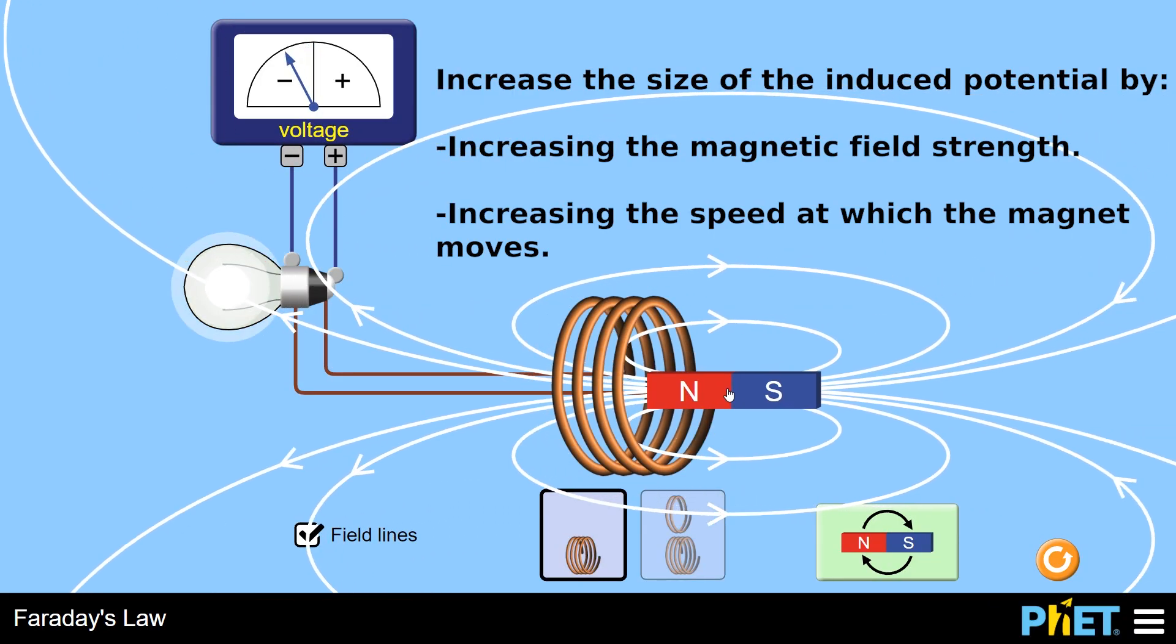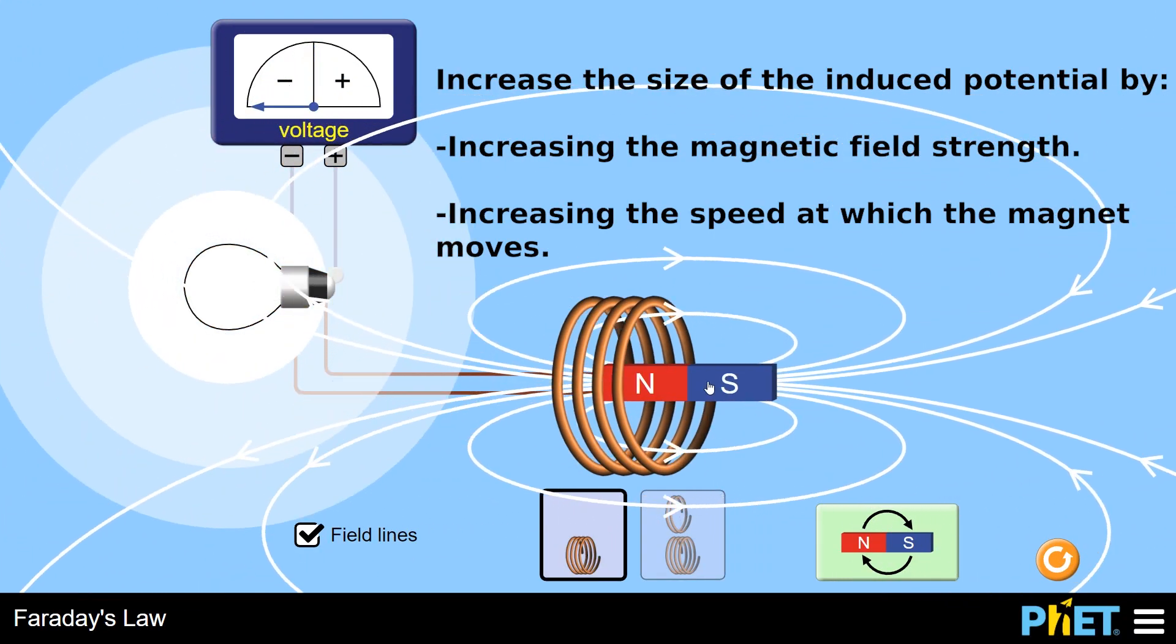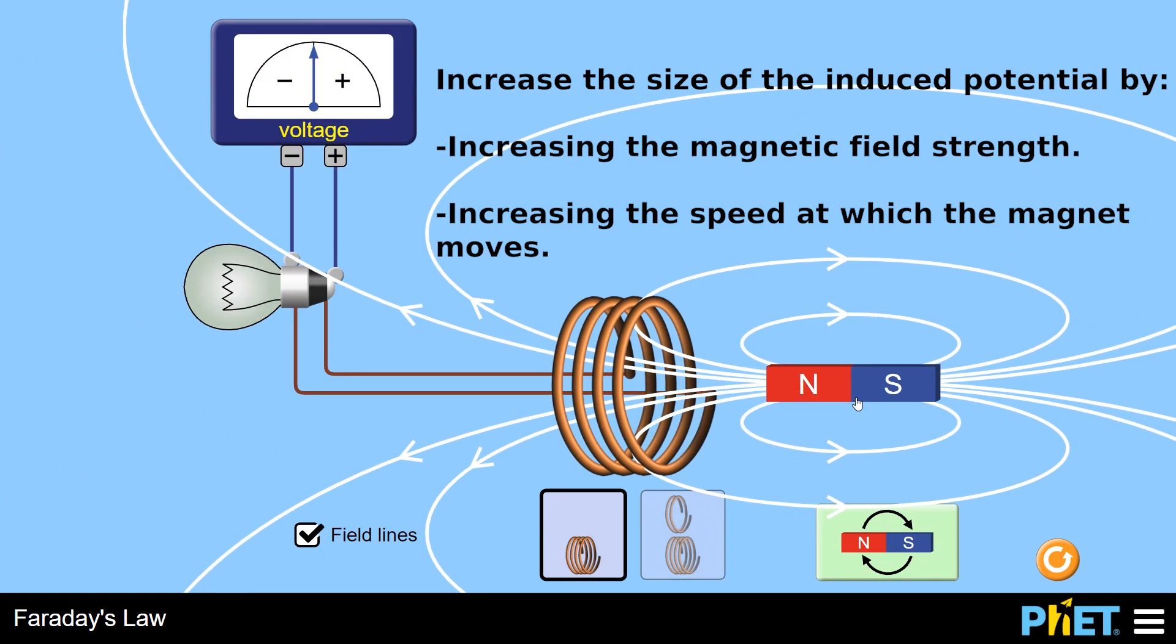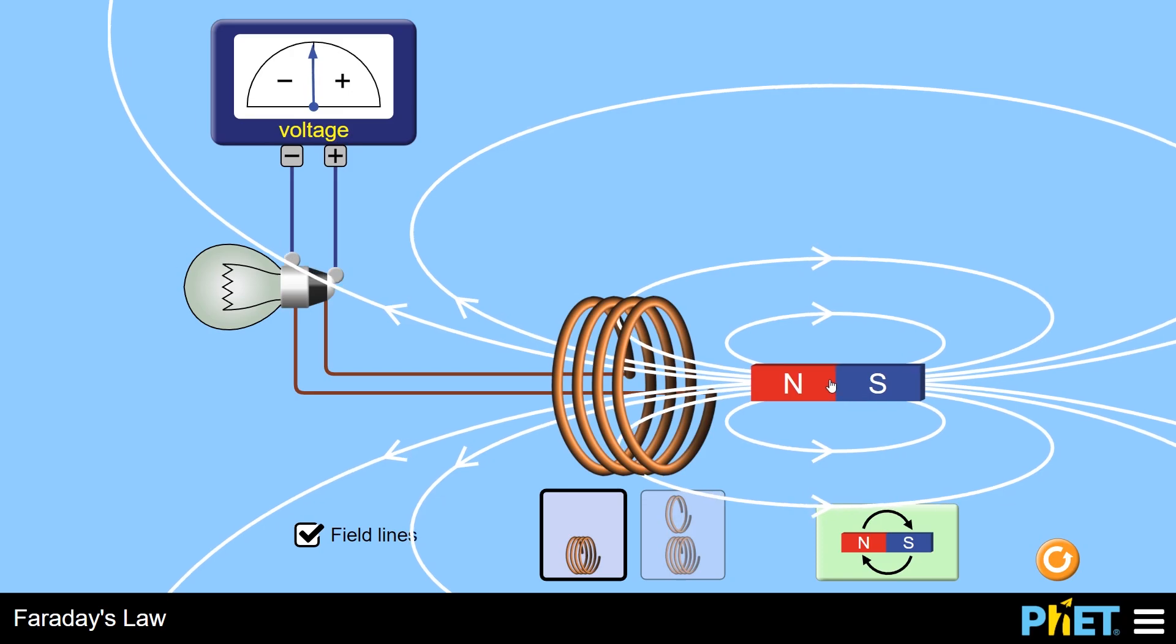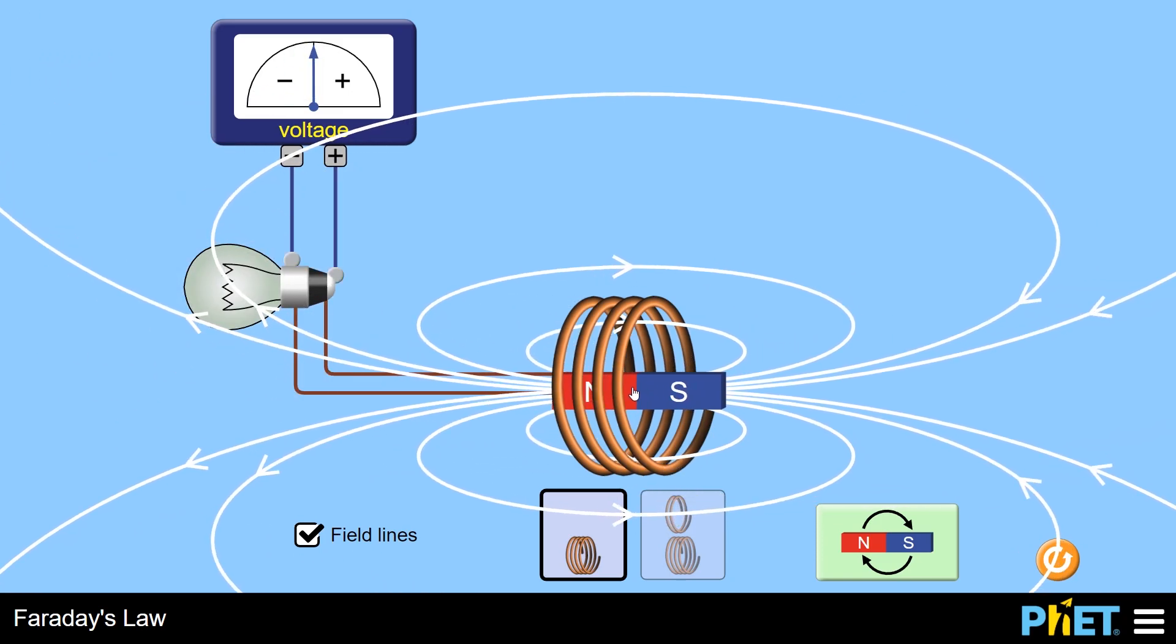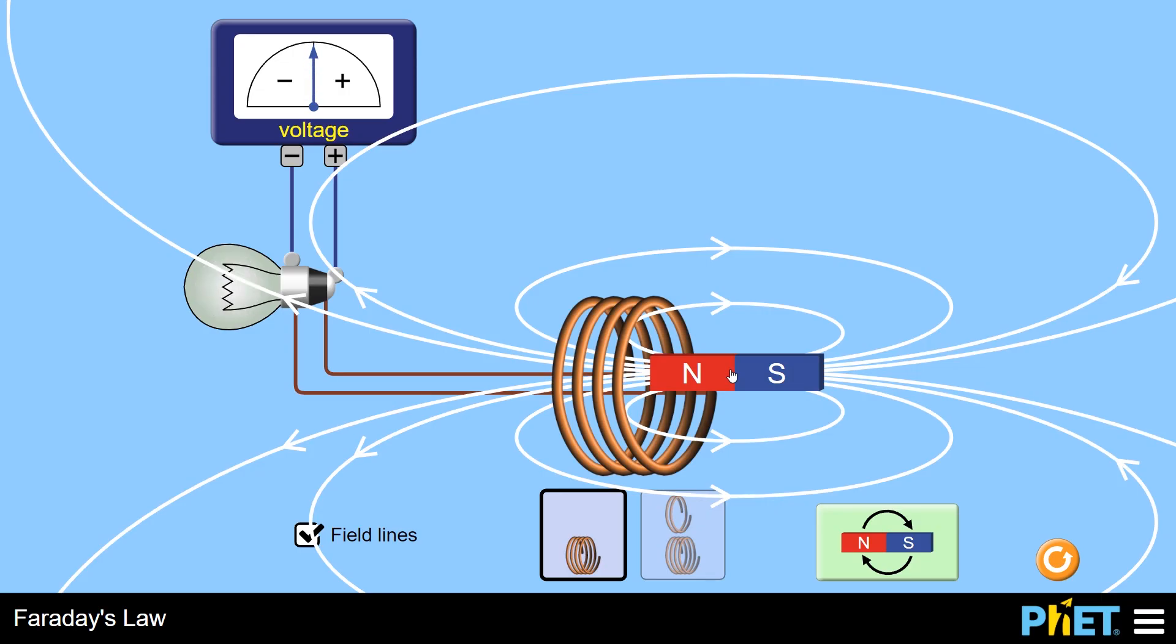And that is the generator effect. That's all there is to it. If you take a wire and you move it through a magnetic field, then it's going to generate a voltage across the coil or across the wire. It doesn't generate a voltage if the magnet or the wire is not moving. So there has to be motion for this effect to happen.